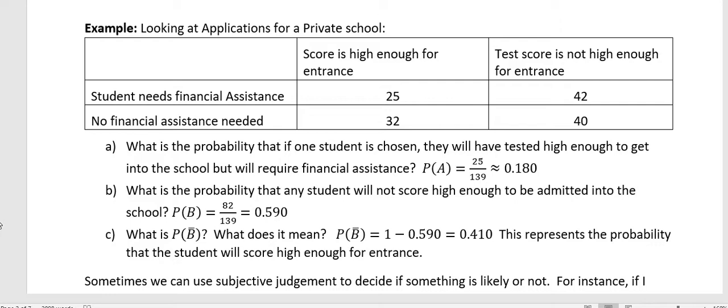In this example, we're looking at applications for a private school. We have people that scored high enough to enter the school and test scores that were not high enough for entrance. Then we have students that need financial assistance and no financial assistance needed.